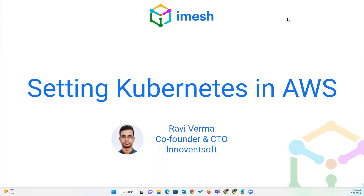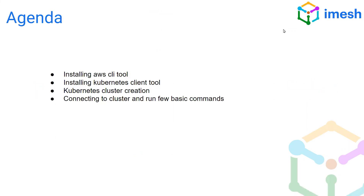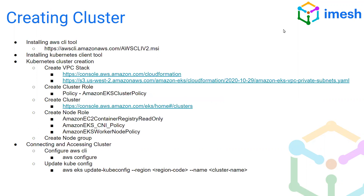In today's session, we'll be going through Kubernetes setup in AWS. Our agenda covers: installing AWS CLI to communicate with AWS services, installing Kubernetes tools like kubectl to connect with the Kubernetes service and get information, Kubernetes cluster creation, and then connecting and getting cluster information.